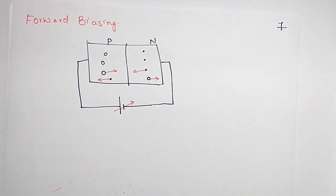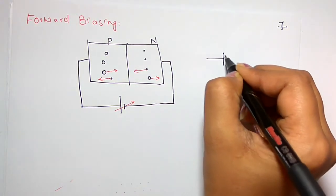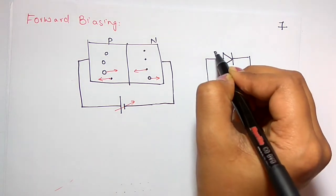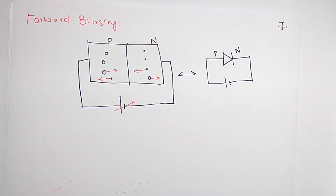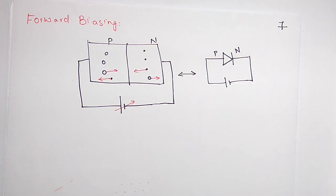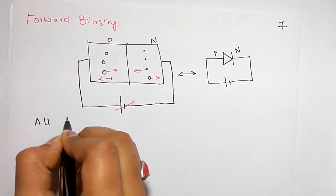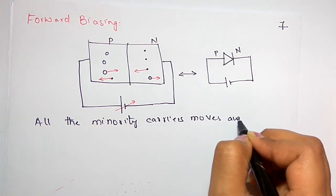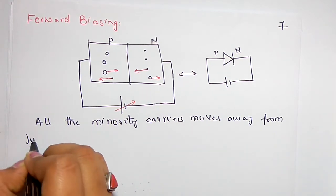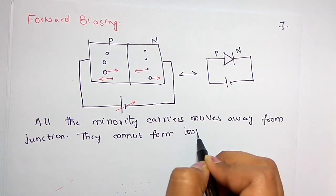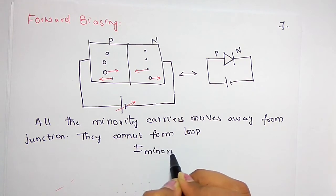This is the applied voltage. In shortcut, the PN junction diode symbol represents this configuration — positive connected to P and negative connected to N. Observing the minority carriers: the electron is a minority carrier in P type and the hole is a minority carrier in N type. All minority carriers move away from the junction; they cannot form a loop. So the current contribution by minority carriers is zero — I minority equals zero.